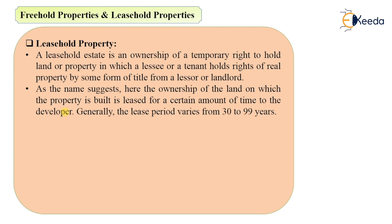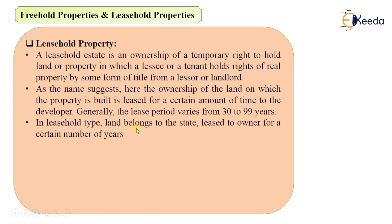The leasehold property will be owned by the lessee only for a certain period of time — he will not be the permanent owner of that property. This period is called the lease period, which is the duration for which a particular person can hold that property. After that, the property will be transferred back to the original owner or the state. This period varies from 30 to 99 years. In leasehold property, the land belongs to the state and is leased to the owner for a certain number of years.